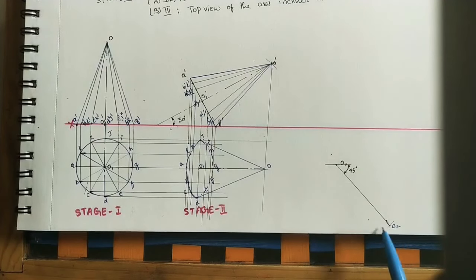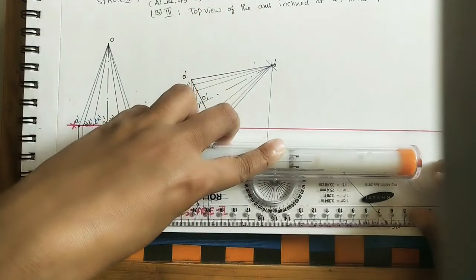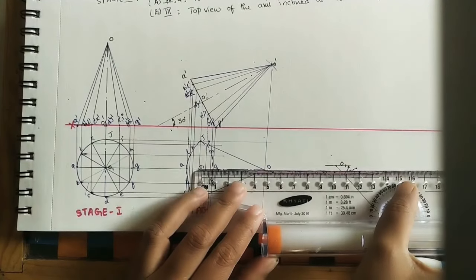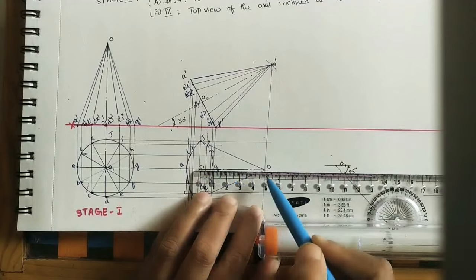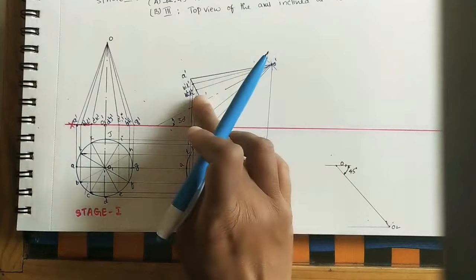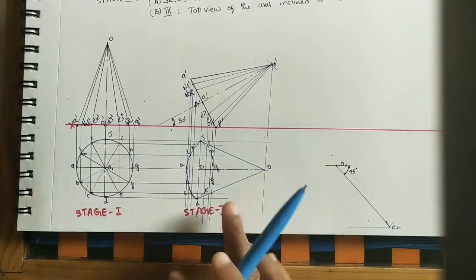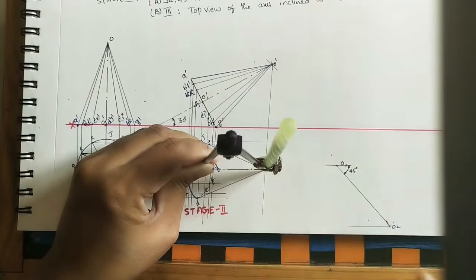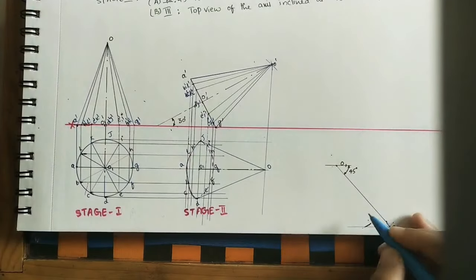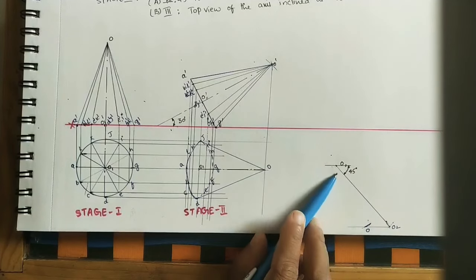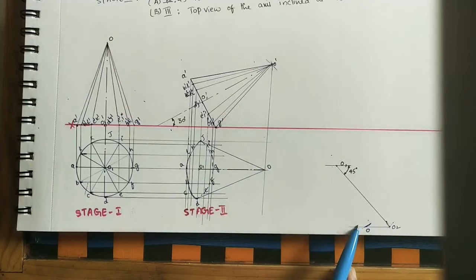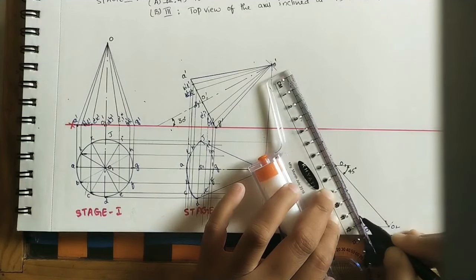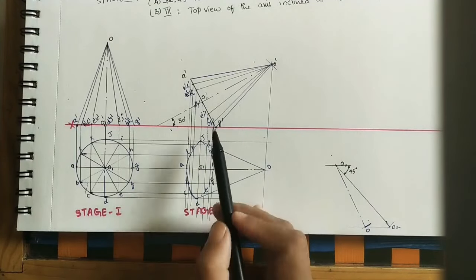The reduced length in the top view (appears as about 5cm instead of 6cm) is because the cone is tilted. Mark the actual 6cm axis length on the locus of the apex. Take O1 as center and cut the arc to find the apex position O. The axis from O1 to O is drawn with the axis line symbol (two long dashes with a dot). We now have O1 and O marked — we will build the complete Stage 3 diagram from these.